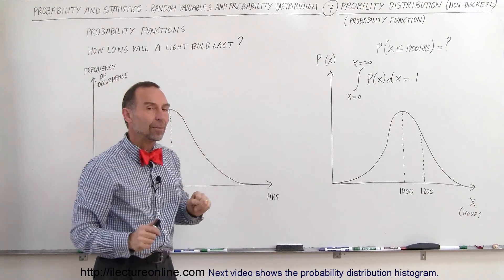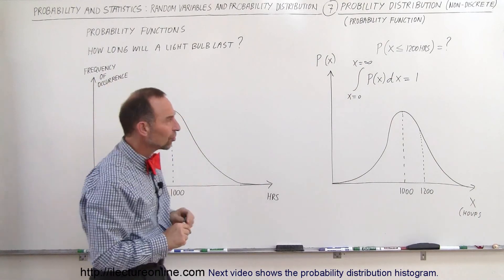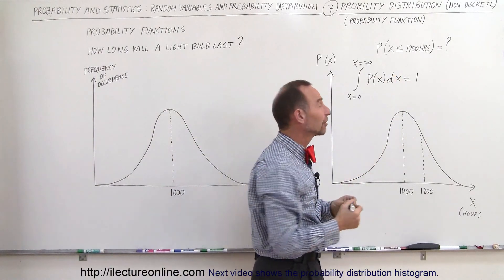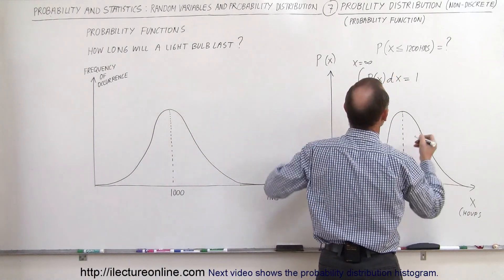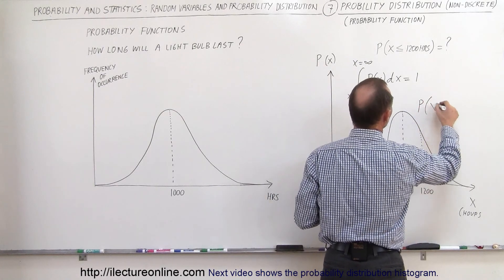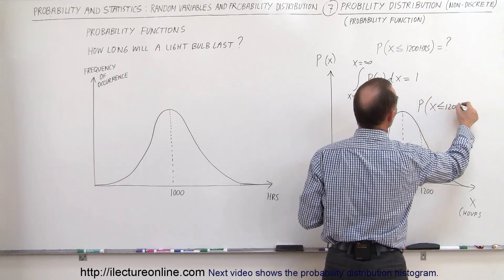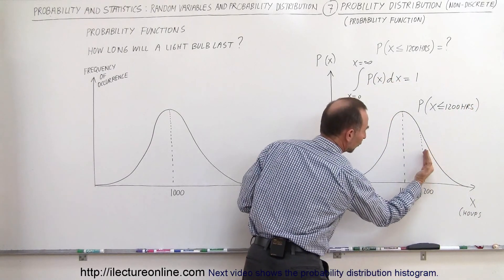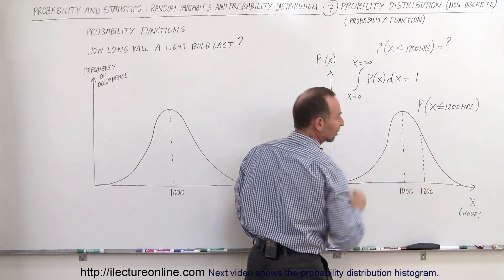But right now I just want you to understand the difference, and so if you want to answer this question for those who've had a little bit of calculus before, you can then say that the probability of x being less than or equal to 1200 hours, and that would be the area of the curve to the left of the point where x equals